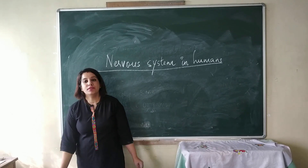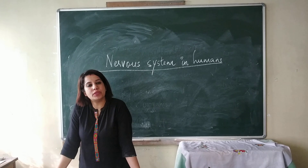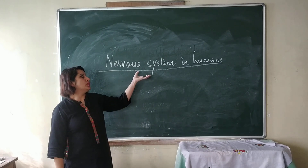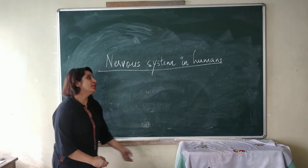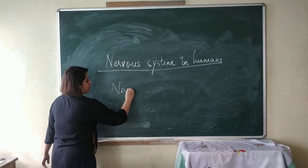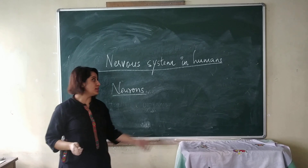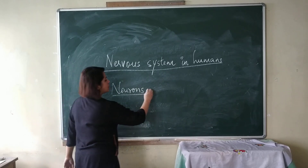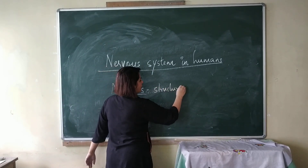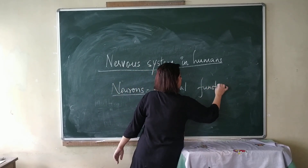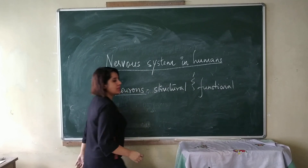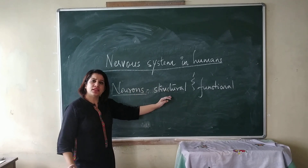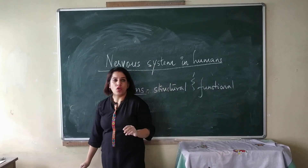The nervous system — we have already discussed about animal tissues in Class 7, where we covered nervous tissue. The nervous tissue is a part of the nervous system. Neurons are the special cells that form the nervous system. Neurons are called the structural and functional unit of the nervous system; they are specialized cells defined within the nervous system.